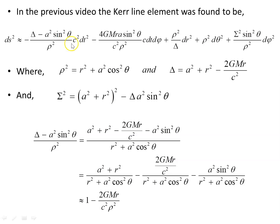The first coefficient of the c squared dt squared term in the line element can be expanded out in terms of r, the distance from the source, m the source mass, a the radius of the mass, and some sine squareds and cos squareds. We are able to approximate this because a is fixed, cos squared varies between 1 and 0, sine squared between 0 and 1, and as we move away from the source mass r increases but a remains constant, so r becomes the dominant term.